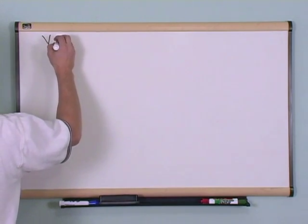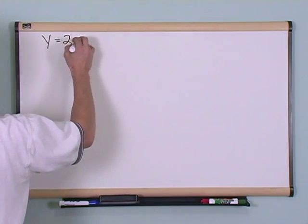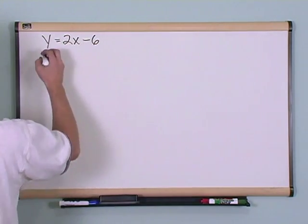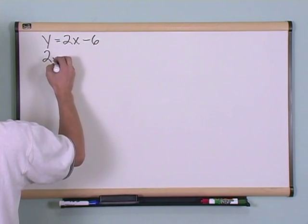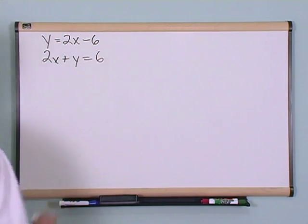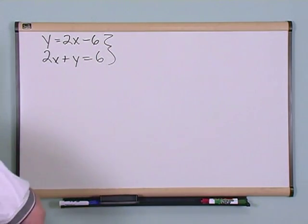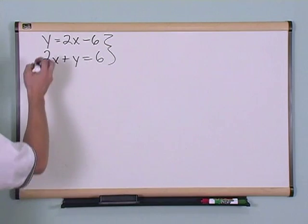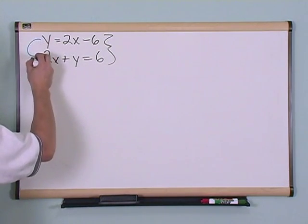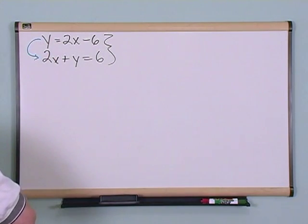Let's say we have another system, y is equal to 2x minus 6. Another equation is 2x plus y is equal to 6. This is my system. What I'm going to do, is I'm going to take this equation, and I'm going to plug it in here. The reason I'm going to do that is because